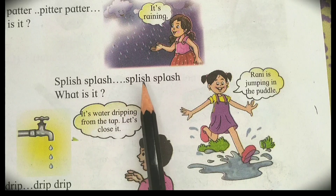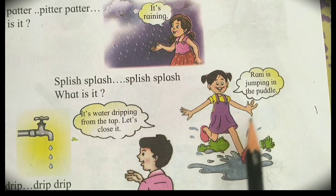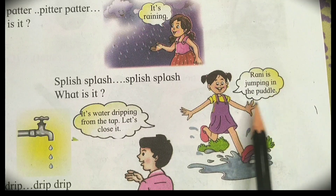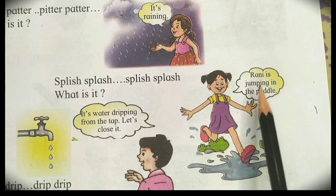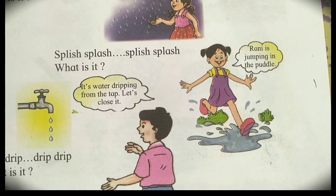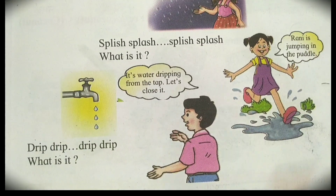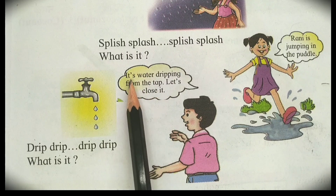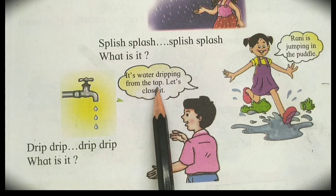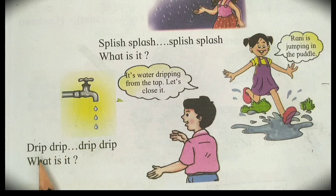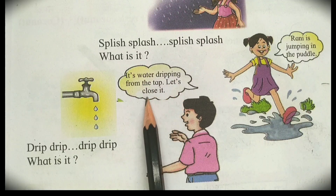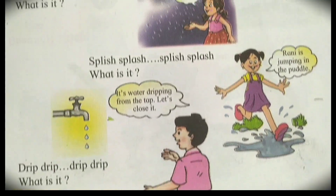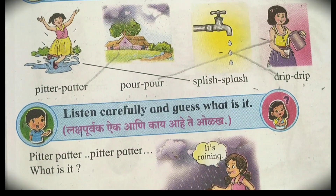Then splish splash, splish splash. What is it? Rani is jumping in the puddle — splish splash means Rani is jumping in the puddle. Now see drip drip, drip drip — what is it? It's water dripping from the tap. Let's close it — save the water. In this way, we have learned about the sounds of water.